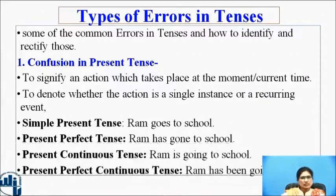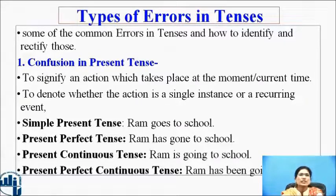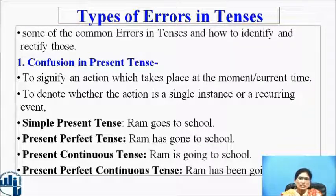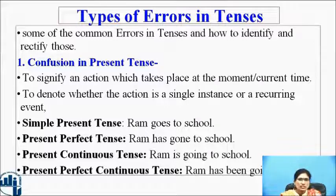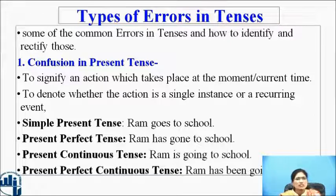Types of errors in tenses. Some of the common errors in tenses and how to identify and rectify those. First: confusion in the present tense — to signify an action which takes place at the moment or current time, and to denote whether the action is a single instance or recurring event. In present tense, there are four types: simple present tense, present perfect tense, present continuous tense, and present perfect continuous tense.